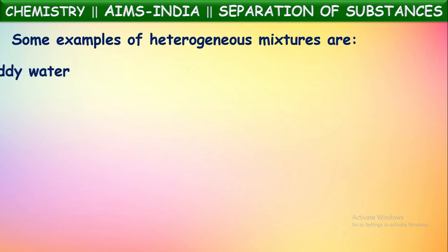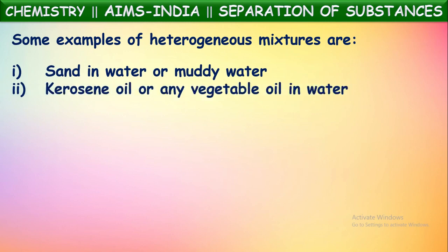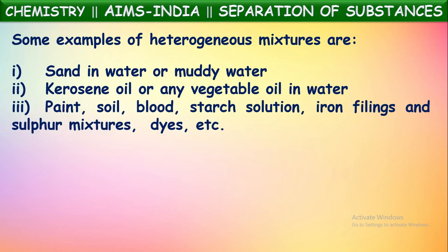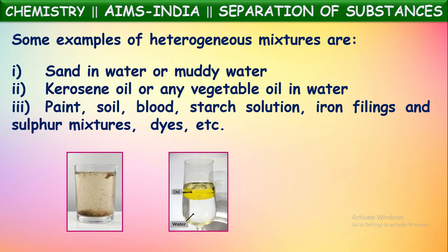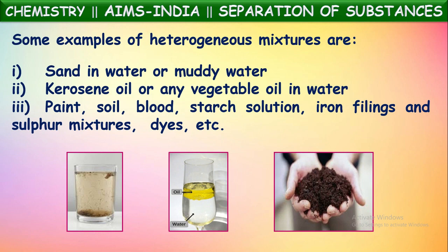Some examples of heterogeneous mixtures are sand in water or muddy water, and kerosene oil or any other vegetable oil in water — oil floats on the water and can be seen clearly. Soil is also a heterogeneous mixture, as it is made up of many components — clay, small stones, pieces of grass, insects, and sand — all of which can be seen through the soil. Hence soil comes under heterogeneous mixtures.